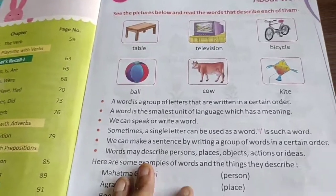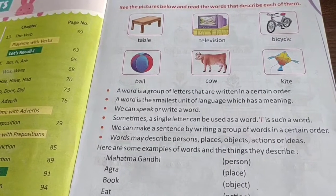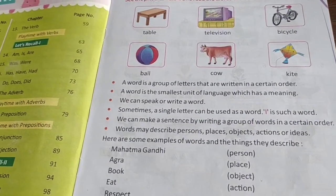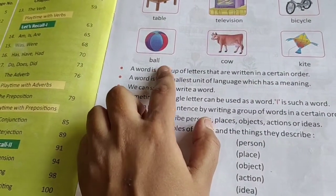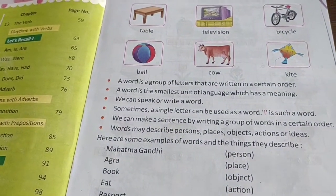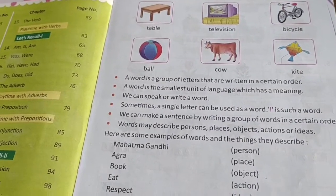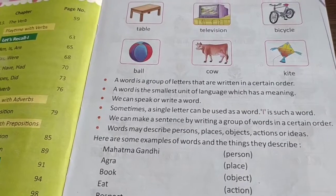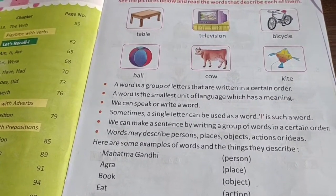Next word is 'television' — also a group of letters written in a certain order. Similarly, 'group' is G, R, O, U, P — five letters again forming the word 'group'. So words are a group of letters that are written in a certain order.